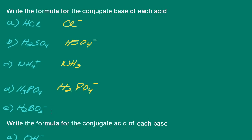Dihydrogen borate — when it loses a proton, its conjugate base has this formula. Notice that the acid had a negative one charge, and when it loses the proton, the charge decreases to negative two.